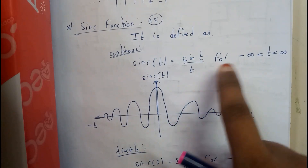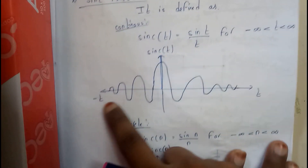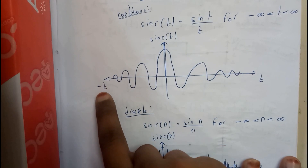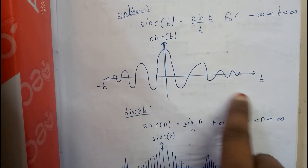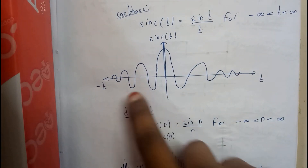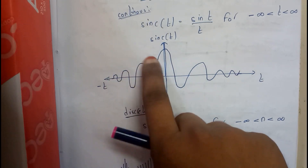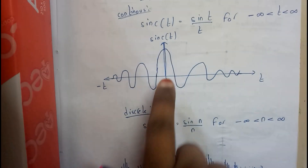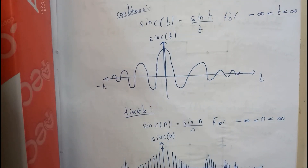It exists from minus infinity to infinity. It will be 0 at minus infinity and at infinity it is 0, and it keeps on increasing, increasing, and its maximum is at t equal to 0. That's it about the sinc function.